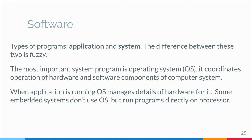Some embedded systems do not use an operating system but run their programs directly on the processor. Modern operating systems for desktop computers come with a user interface that enables users to easily interact with application programs and with the operating system itself by using windows, buttons, menus, icons, the mouse, and the keyboard.